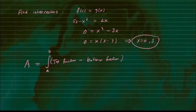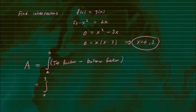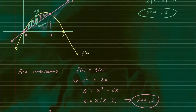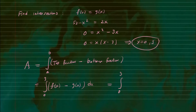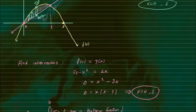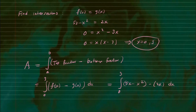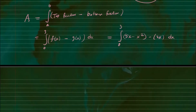So let's write that out. We're integrating from zero to three — the points of intersection — where the top function is f of x and the bottom is g of x dx. The top function f of x is 5x minus x squared, and the bottom function g of x is 2x. So we're integrating from zero to three of 5x minus x squared minus 2x dx.